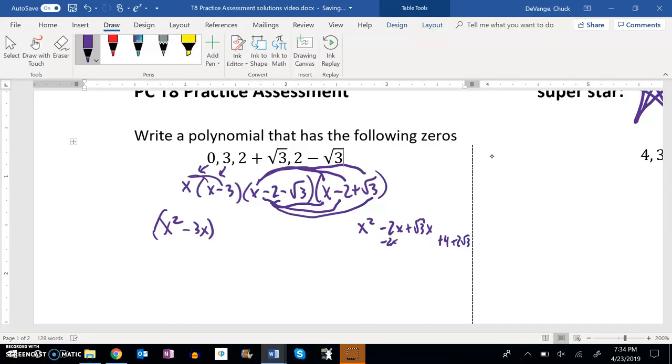And let me distribute this negative root 3 now. Negative root 3 times x, that's negative root 3x. Negative root 3 times negative 2 is positive 2 root 3. And negative root 3 times root 3, let me write that over here. Negative root 3 times root 3, well positive times a negative is a negative, and square root of 3 times square root of 3 is 3, so that's a minus 3.